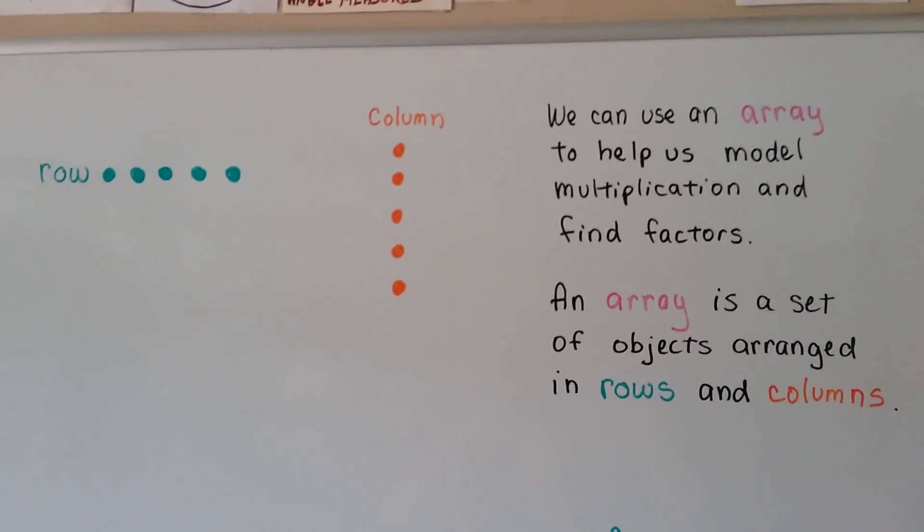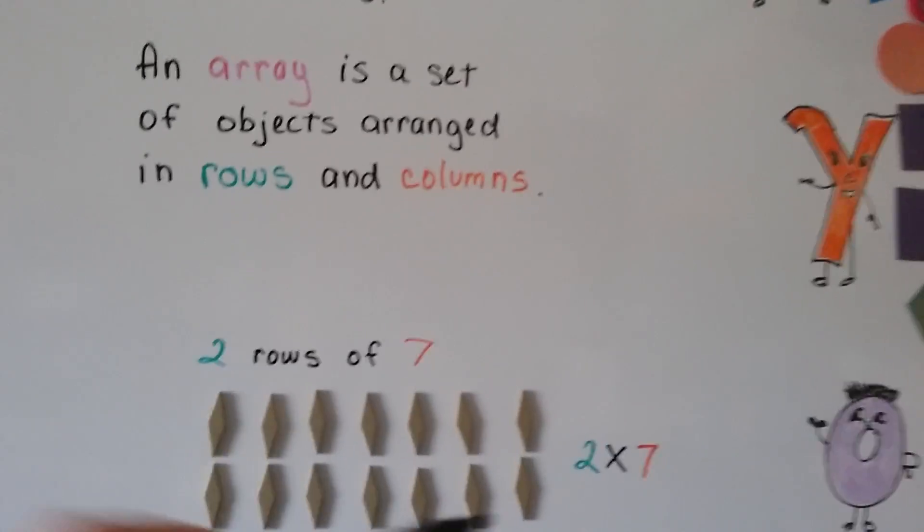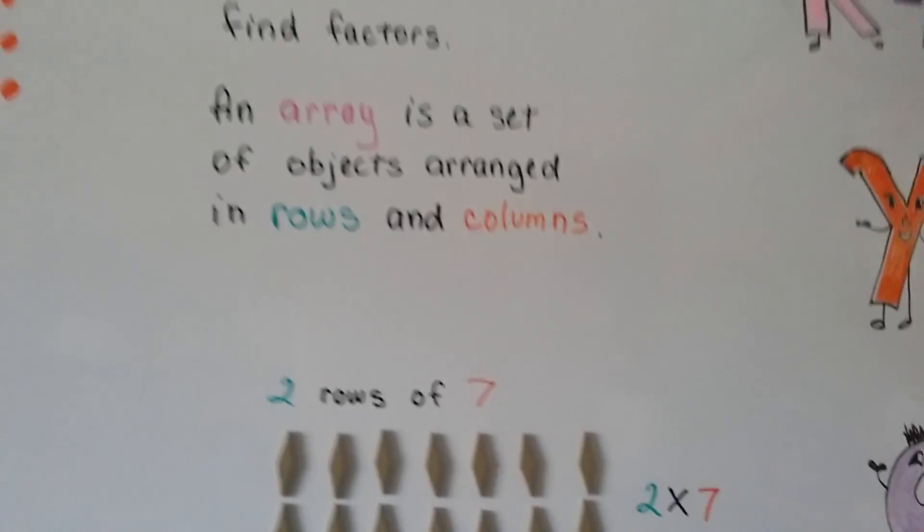You remember what factors are, right? Factors are the numbers that we multiply together to get a product. The 2 and the 7 are factors.